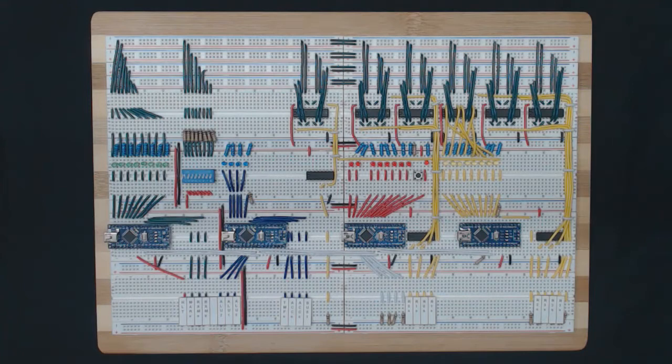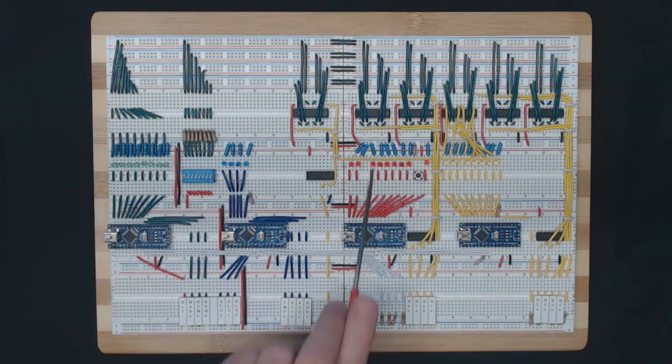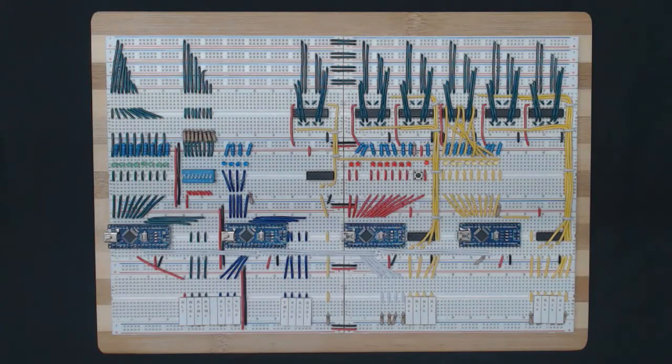If we look at the R0 register here, there are in fact eight inputs and eight outputs. It's just that in our case, the inputs and outputs are tied together using the short green jumpers since they are connected to the same bus.